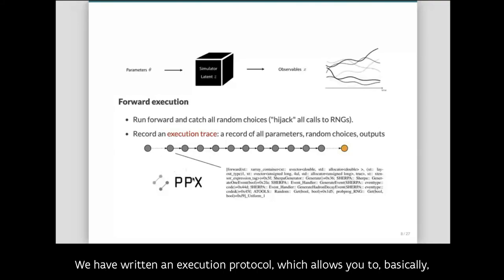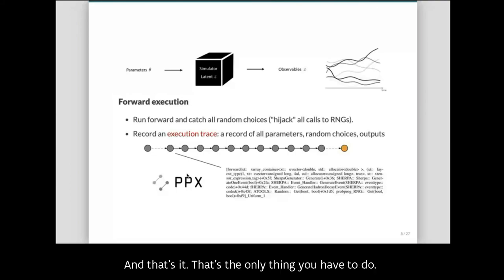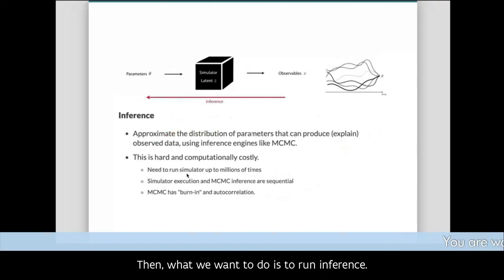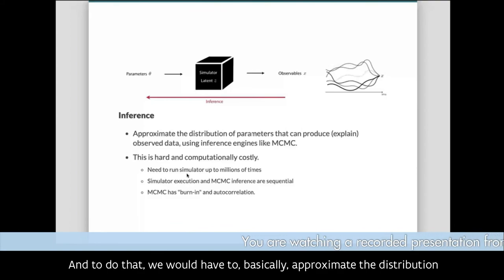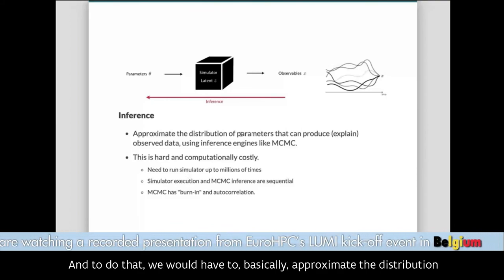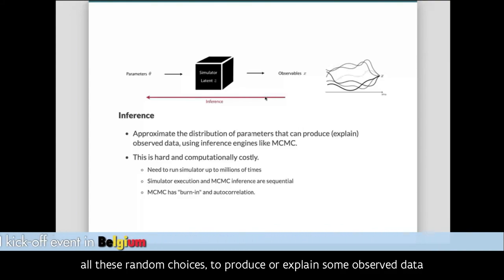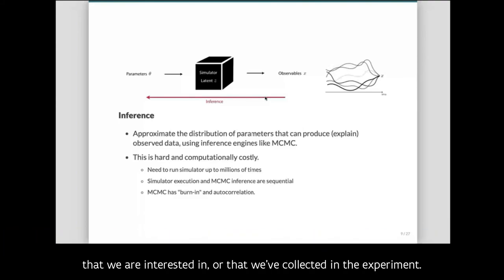This may seem complicated, but actually we've written an execution protocol that lets you simply replace the calls to random number generators — that's the only thing you have to do, you don't have to change the entire code base. Then we want to run inference, which requires approximating the distribution of parameters and latent variables to explain observed data collected in an experiment.